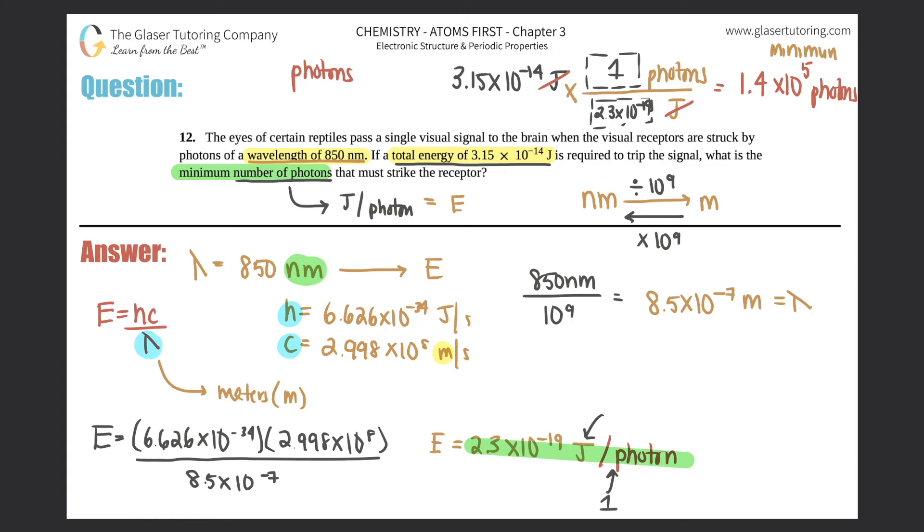And that is the minimum number of photons needed in order to strike this receptor. So box this answer off, that's the answer you get, and round it to 2 sig figs.